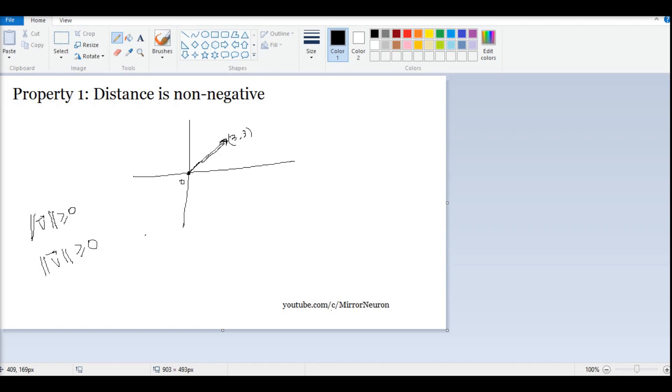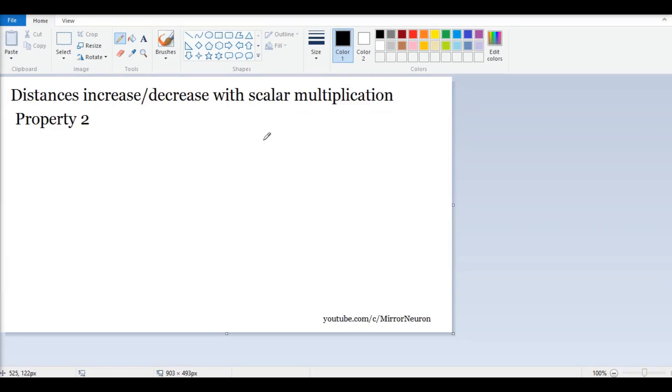All right, so the next property says that the distance increase or decrease or scales depending on the scalar multiplication. So for example, if I have say one vector like this, okay, and say this looks something like this, which is two comma two, right? And I can represent my vector V equal to say two comma two. Now if I do a scalar multiplication of a is equal to say three, that means it becomes something like this, multiplied by three, right, and it becomes six by six.